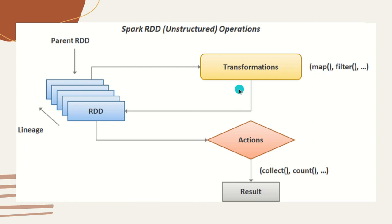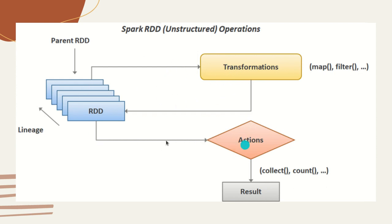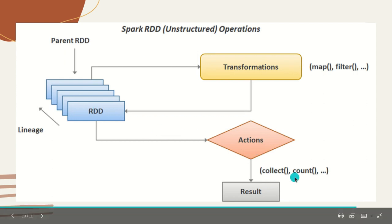This is how RDD works. You can see we have an RDD — the first one is called the parent RDD, which is the original RDD that can't be changed, but it can undergo transformations. That's why you get multiple copies of RDD, and it's a chain of transformations like map, filter, and others. This cycle stops when you call an action. Lineage is how the child RDD is linked with the parent RDD — it's called the lineage graph. You get a result when you call an action using collect, count, and similar operations.